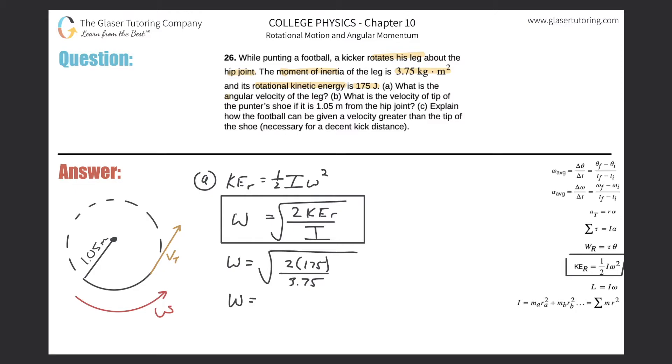Square root of two times 175 divided by 3.75 equals 9.66 times 10 raised to the nothing - that would actually be valid.